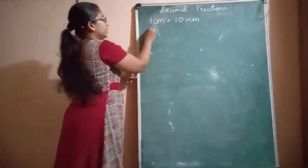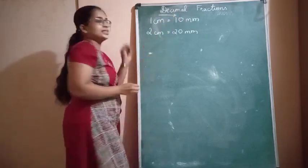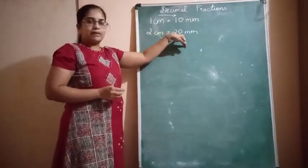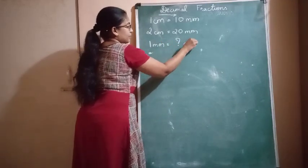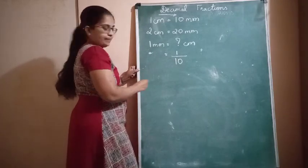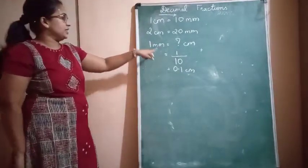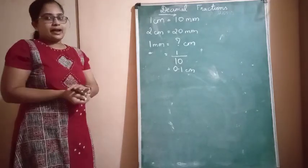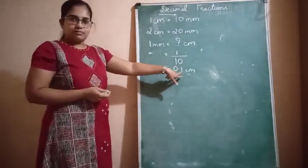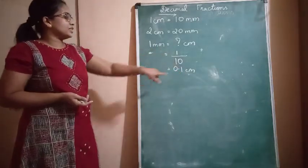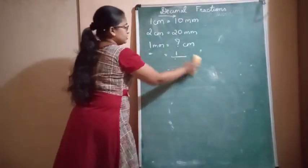2 centimeters would be 2 × 10 = 20 millimeters. If you are converting centimeters to millimeters you multiply by 10. Whereas if you do the reverse — finding how many centimeters 1 millimeter is — you write it as 1 upon 10, which gives 0.1 centimeters. Notice that in meter-to-centimeter conversions we had 2 digits after the decimal, whereas in centimeter-to-millimeter conversions we have only 1 digit after the decimal. This is very important. Now let us look at sums based on these.